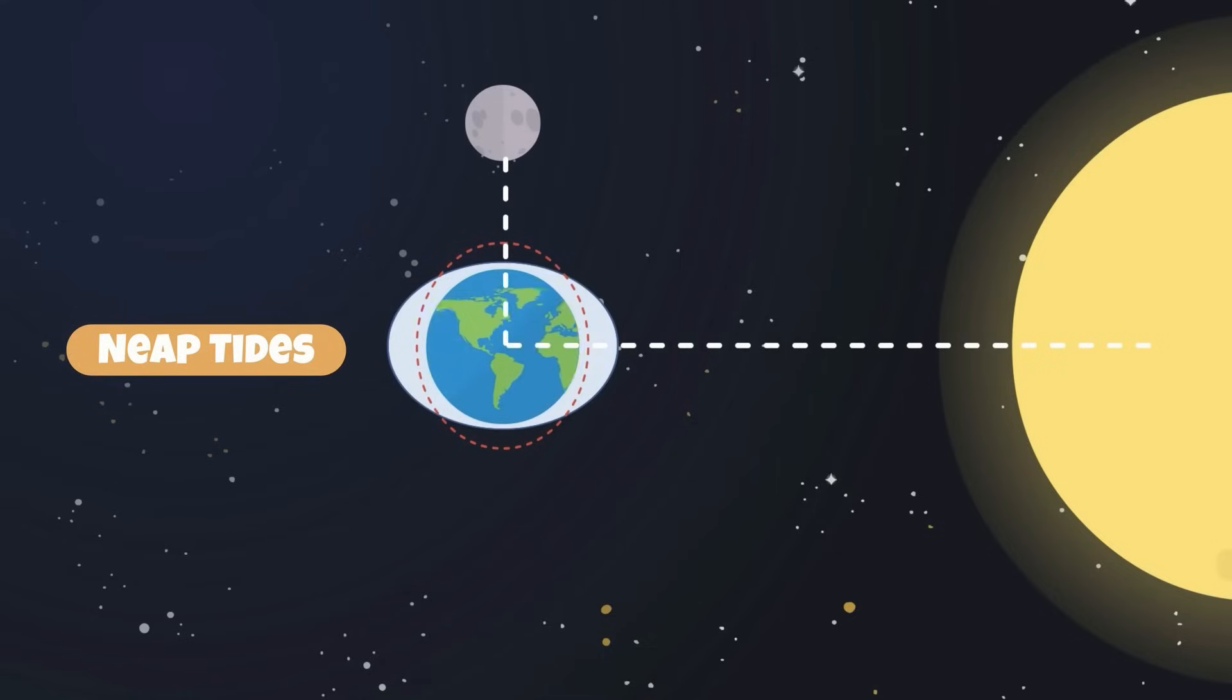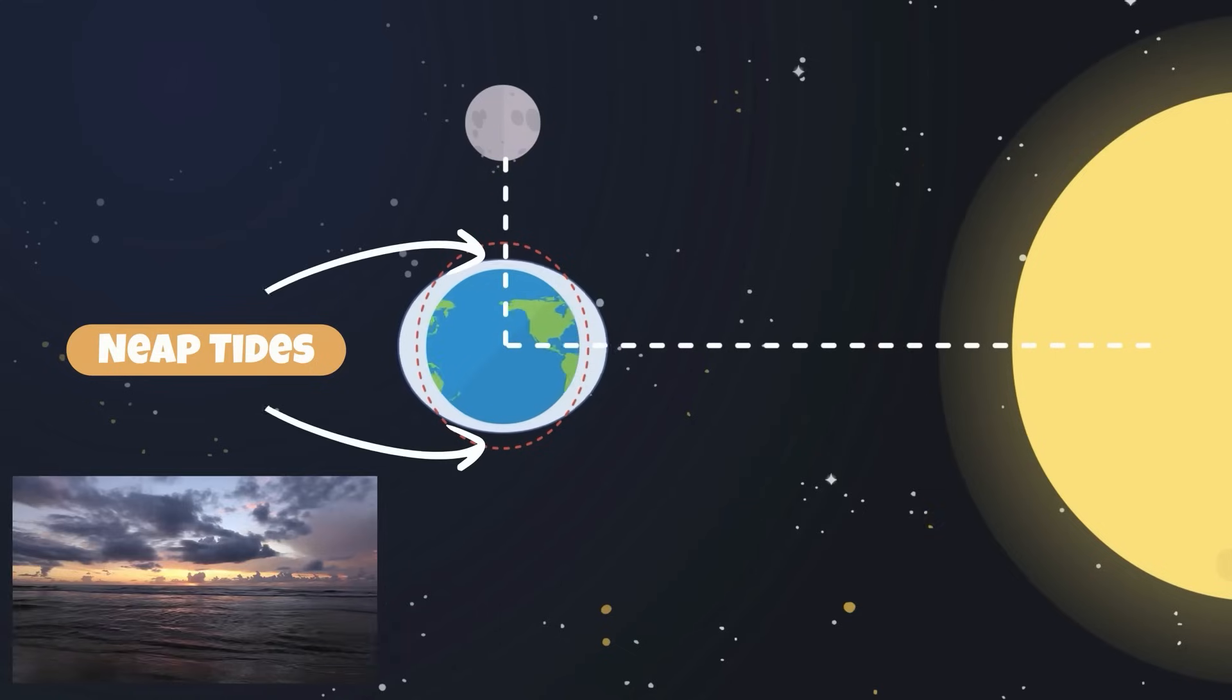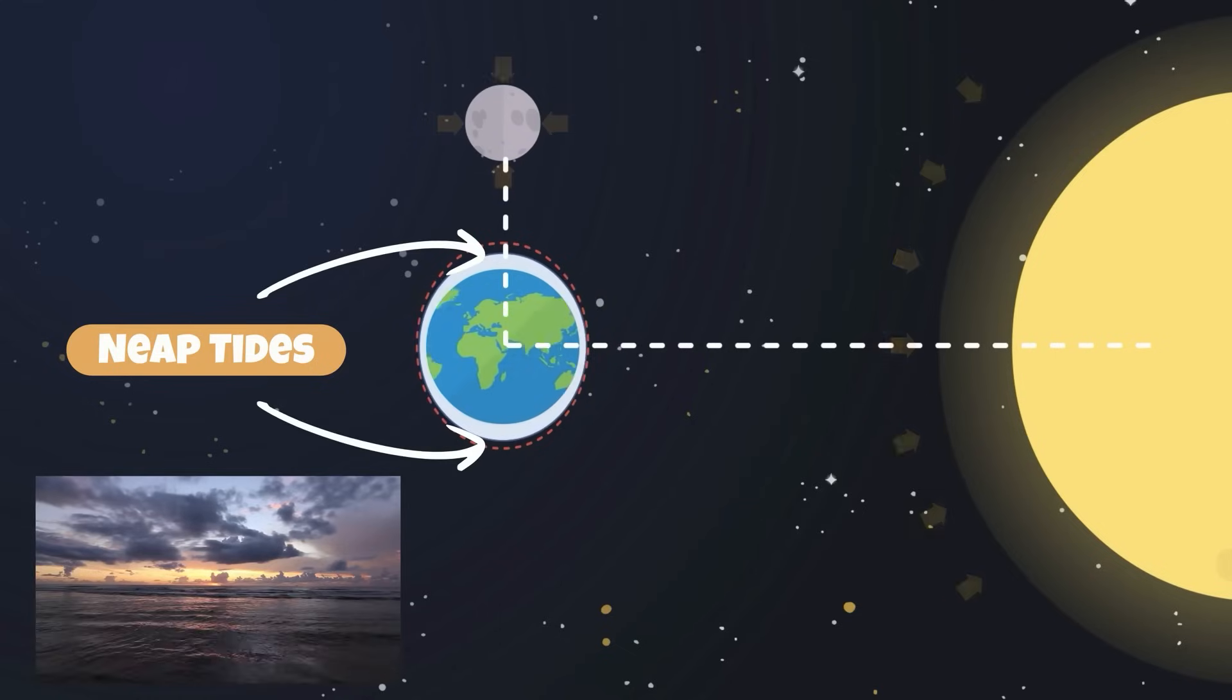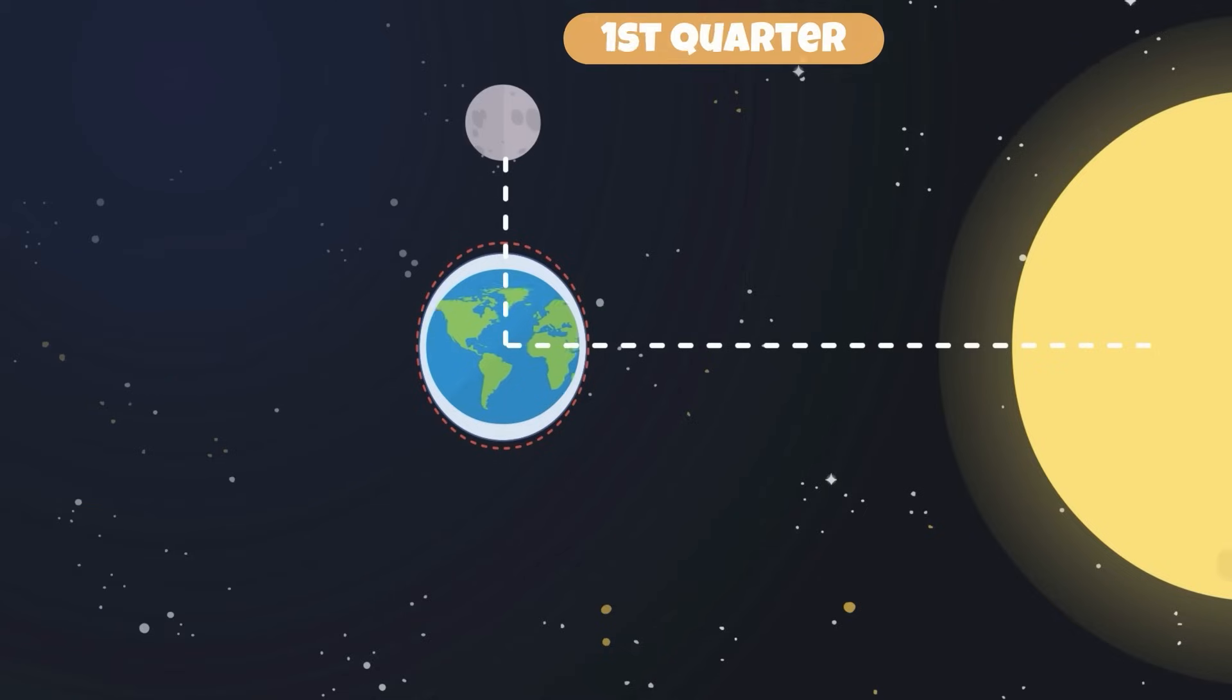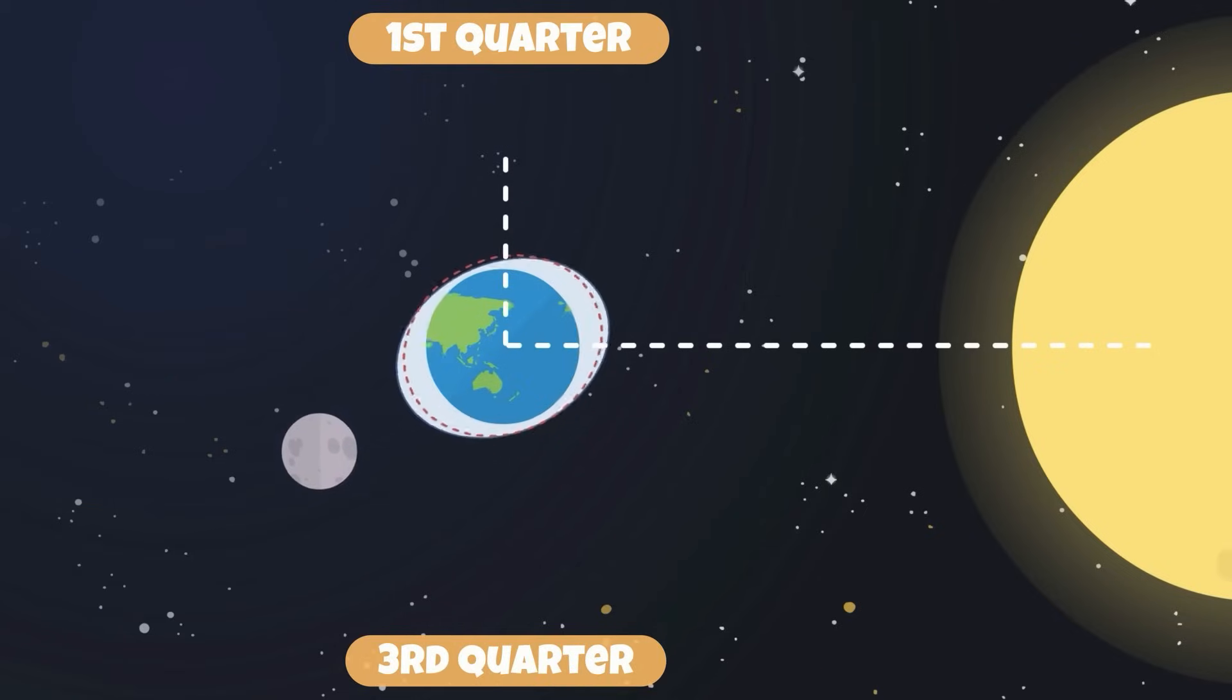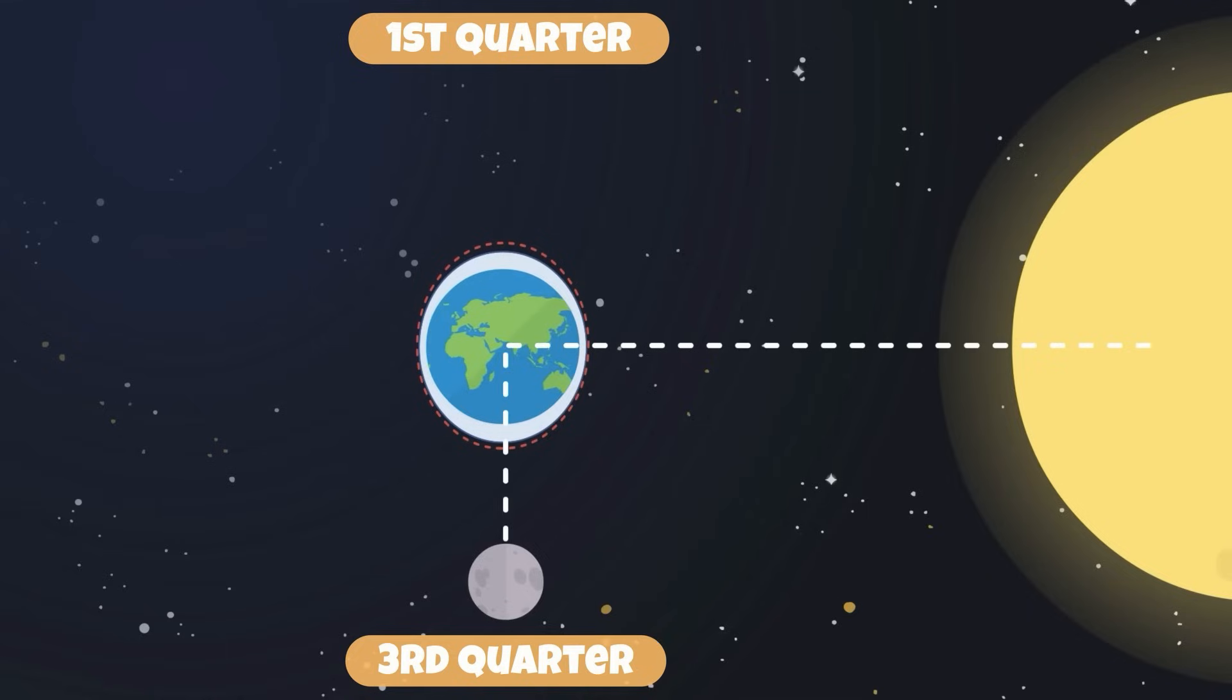In a neap tide, the gravitational pull of the sun counteracts that of the moon, forming moderate tides. Neap tides occur at the first and third quarter phase of the moon. This is where the moon's orbit around the Earth is perpendicular to the sun.